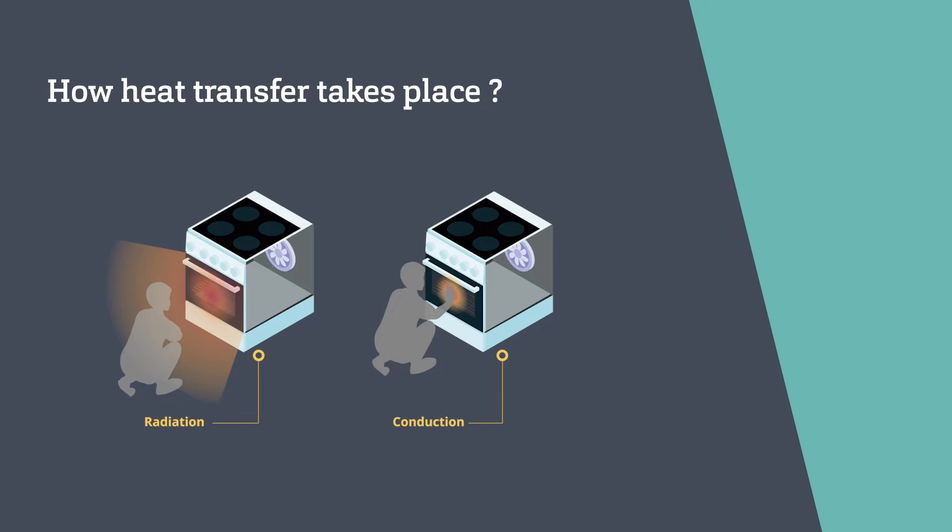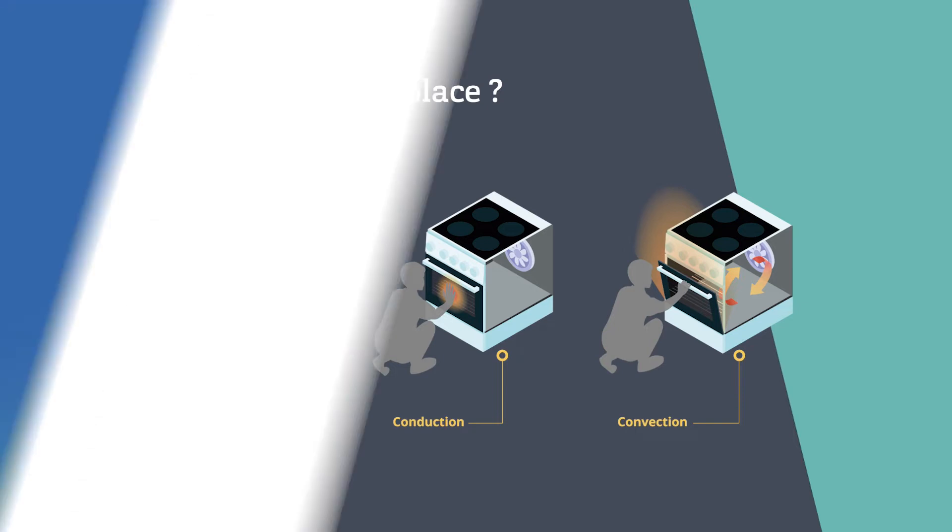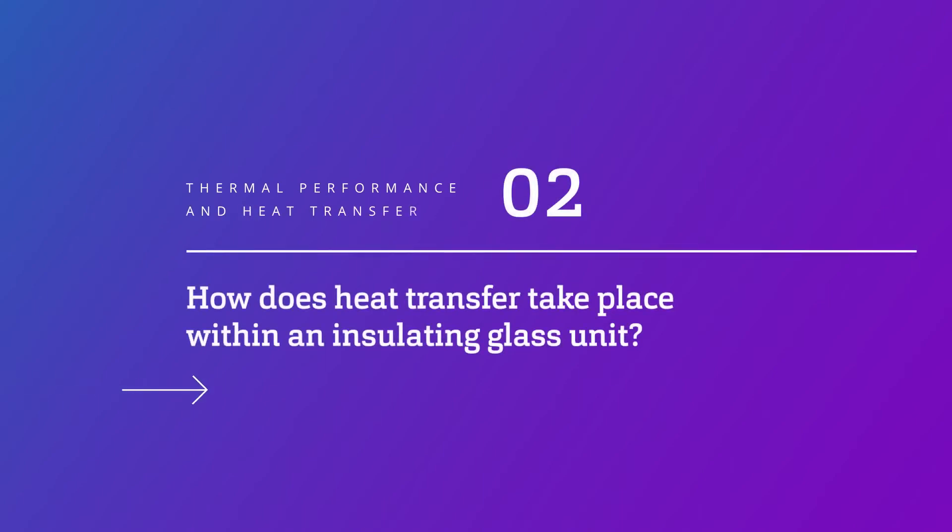Don't touch the oven or you may get burned. Convection is heat transfer through currents of moving air or gas. If you open the oven, the hot air will escape and immediately rise. All three types of heat transfer take place within an insulating glass unit.